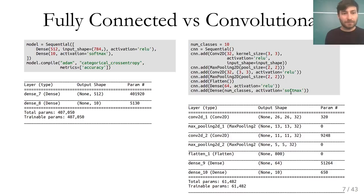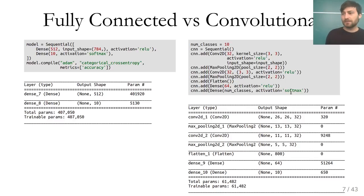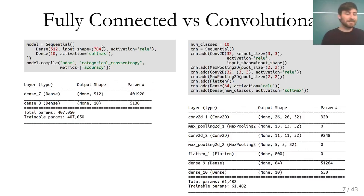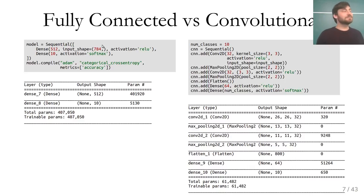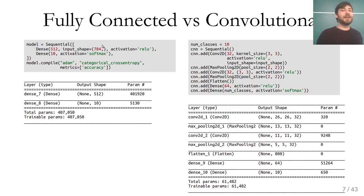For the fully connected network, we could add a flattened layer before the dense layer instead of reshaping the input beforehand — that's equivalent. I would just do the reshaping once before training rather than on each mini-batch, but the result is the same.